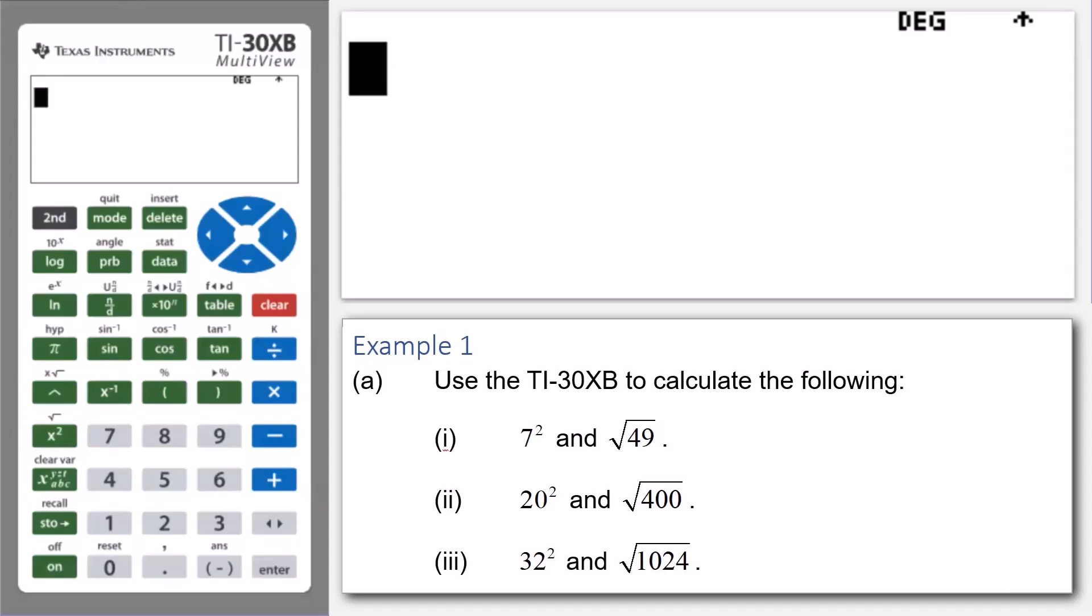Okay, so let's move to the calculator. What we're going to do now is enter 7, press the X squared button and press enter, and it shows us that 7 squared is equal to 49.